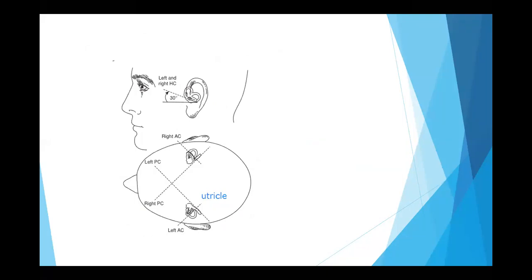The two horizontal semicircular canals are paired together. If I am turning towards the right side, the right horizontal semicircular canal sends excitatory responses and the left horizontal semicircular canal sends inhibitory responses. Whichever side you move toward produces excitatory responses, while the other side sends inhibitory responses. The brain perceives the direction only by receiving both inputs together.